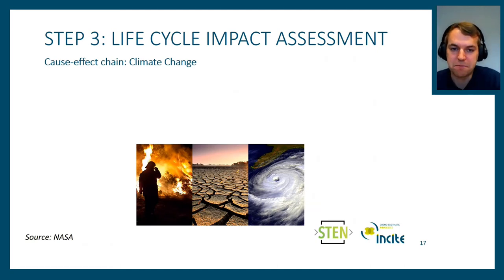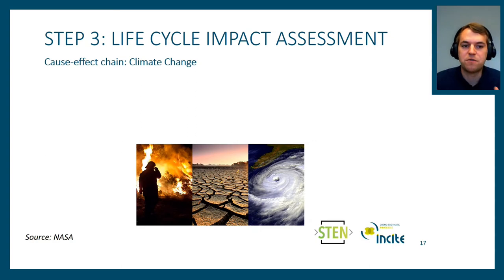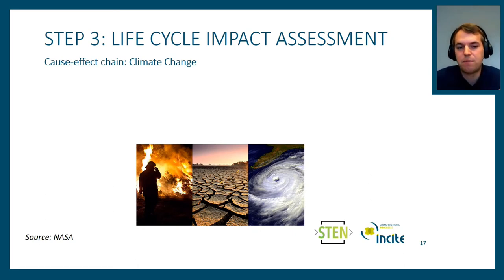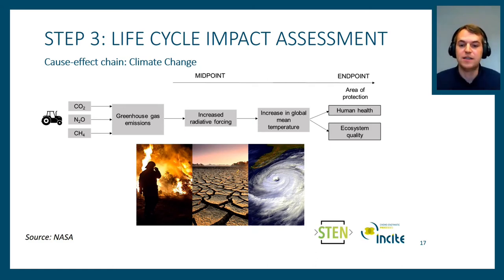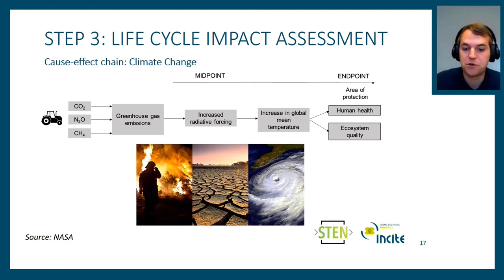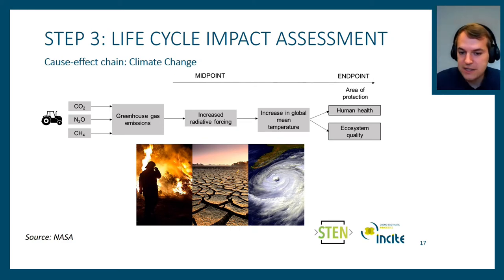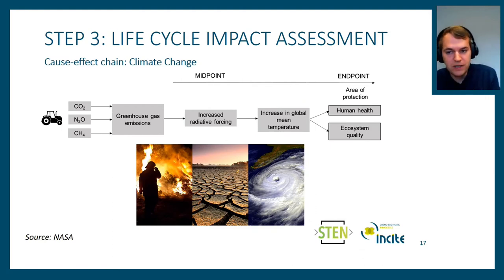In the third step, we perform the actual impact assessment. We have all our inputs and outputs and now need to quantify how they influence the environment using cause-effect chain modeling — using models already developed by various organizations. For example, for climate change, emissions such as CO2 and N2O result in radiative forcing in the atmosphere, which increases global mean temperature, leading to more extreme events that impact human health and ecosystems. Indicators like radiative forcing are called midpoint indicators; effects on human health or ecosystem quality are endpoint indicators.